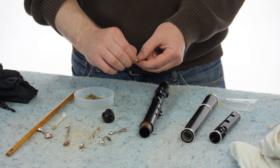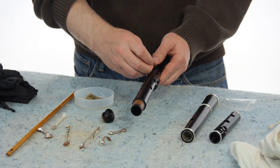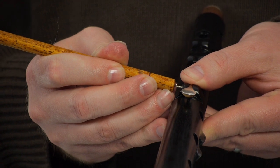When reassembling keys, the end of your wooden cleaning rod can assist in gently pushing pins back into place.